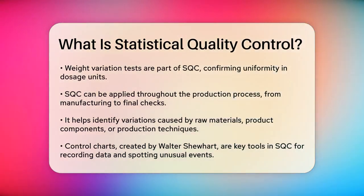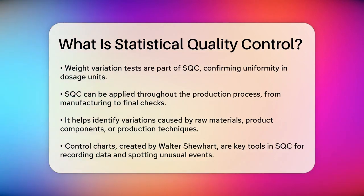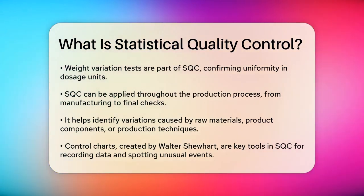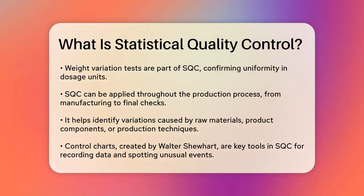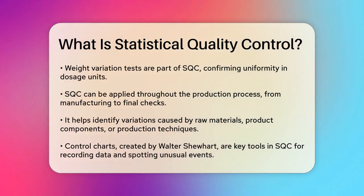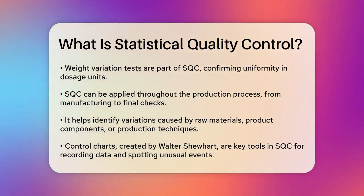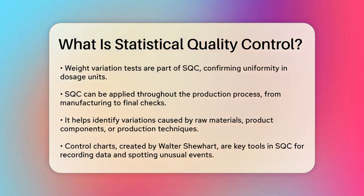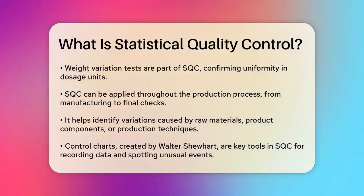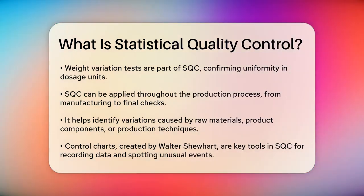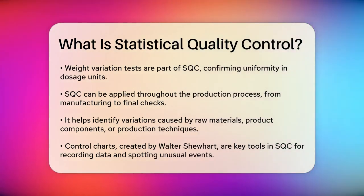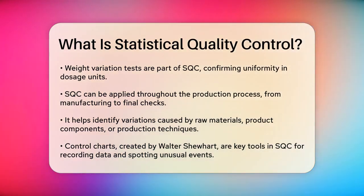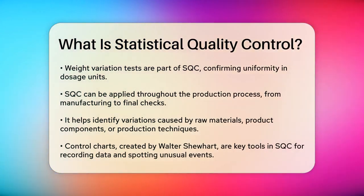In the pharmaceutical industry, SQC is even more critical. For example, when producing tablets or pills, the weight must be precise to ensure the correct dosage. If a tablet is too heavy, it could be harmful. If it's too light, it might not be effective. SQC techniques, such as weight variation tests, help confirm the uniformity of the dosage units, which is essential for product safety and quality.